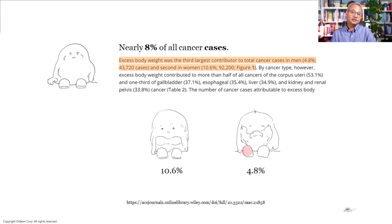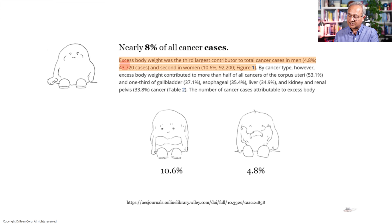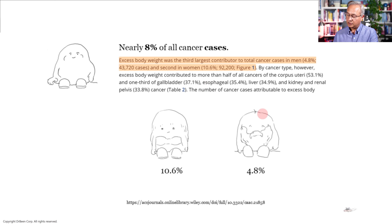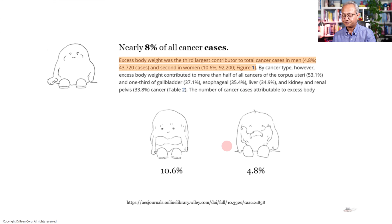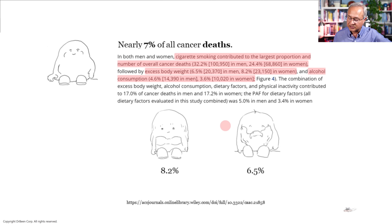Nearly 30% of all cancer deaths reviewed under these modifiable risk factors were attributable to them. Cigarette smoking contributed to 68.3% of attributable cancer deaths in men and 60.2% in women — overall about 30% of deaths. For excess weight: nearly 8% of all cancer cases. Excess body weight was the third largest contributor to total cancer cases in men and second largest in women, contributing to more than half of corpus uteri cancers and one third of gallbladder, esophageal, liver, and kidney cancers. Nearly 7% of all cancer deaths were attributable to excess weight.